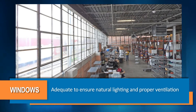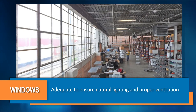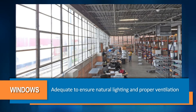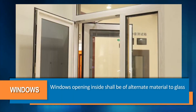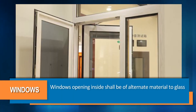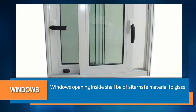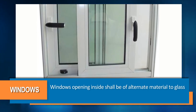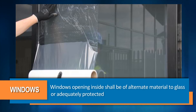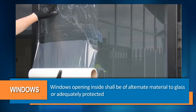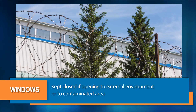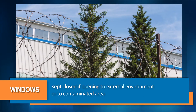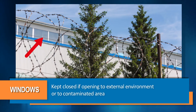Windows shall be adequately provided to ensure natural lighting and proper ventilation. If windows are opening inside the manufacturing area, they shall be made either of alternate material to glass or adequately protected. Windows shall be kept closed if opening to external environment or to a contaminated area.